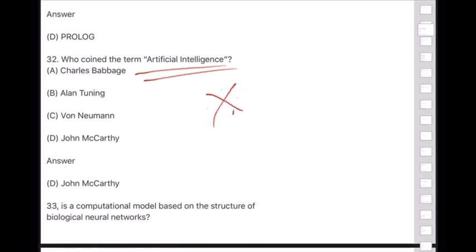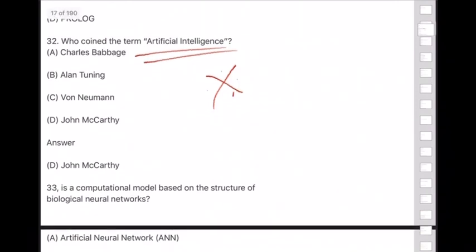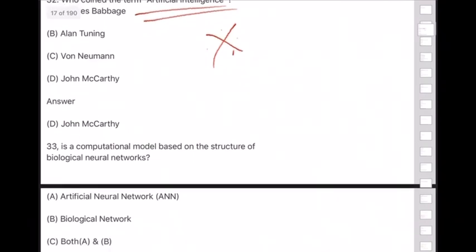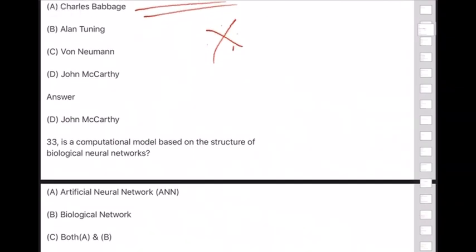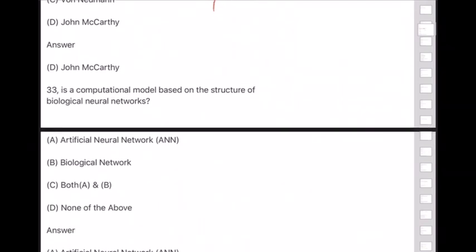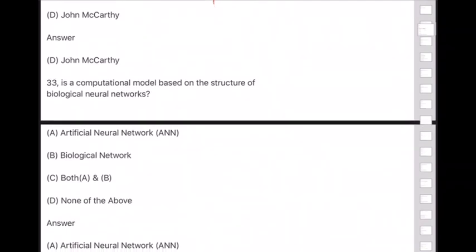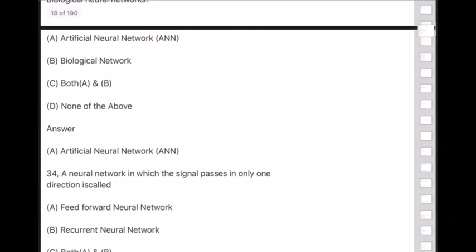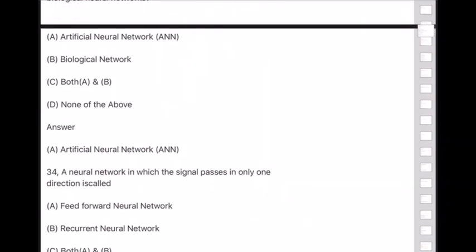Question 33: A computational model based on the structure of biological neural networks is called — answer is option A — Artificial Neural Network.